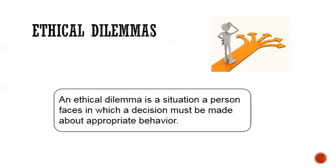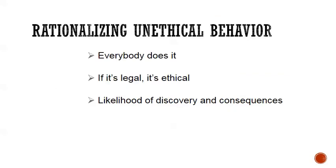The cases we're going to cover in this class deal with ethical dilemmas. An ethical dilemma is a situation a person faces in which a decision must be made about appropriate behavior. Maybe your boss tells you to do something and you think it might not be the best thing to do morally — should you do it or not? Some people will go ahead and act unethically and then rationalize it: 'Everybody does it, so why shouldn't I?' or 'It's legal, so it must be ethical,' or they consider the likelihood of being found out. That's rationalization. You should always do what's right, regardless of whether other people are doing it. Just because something is legal doesn't mean it's necessarily the best thing to do.